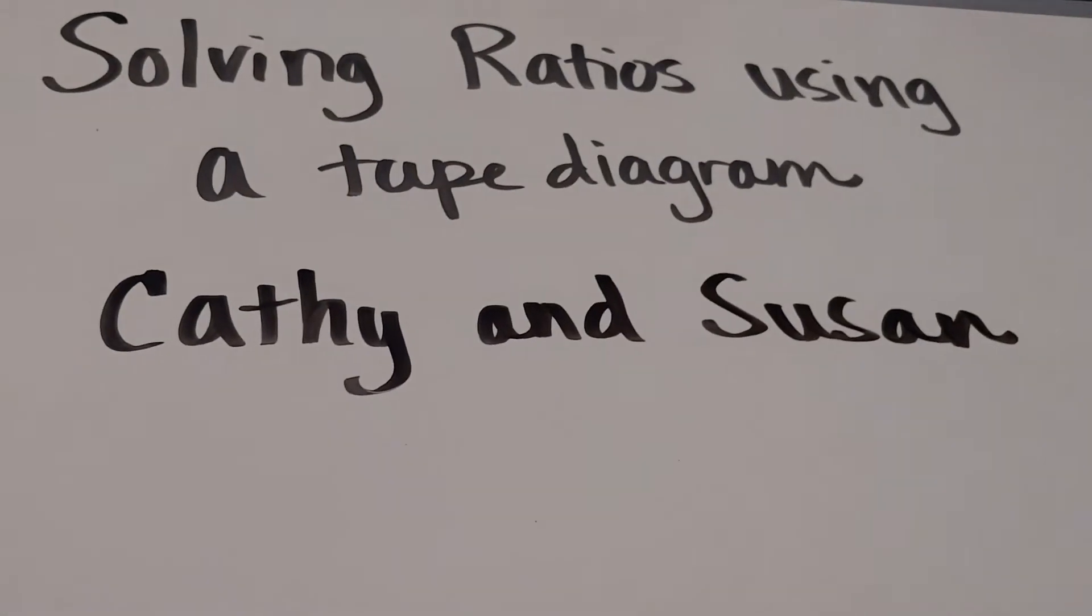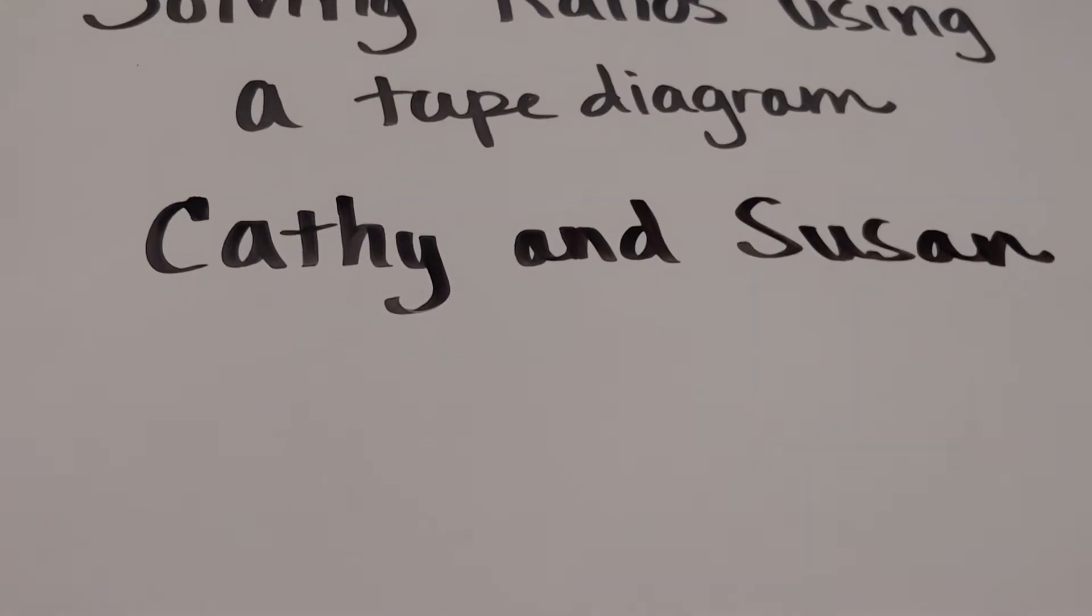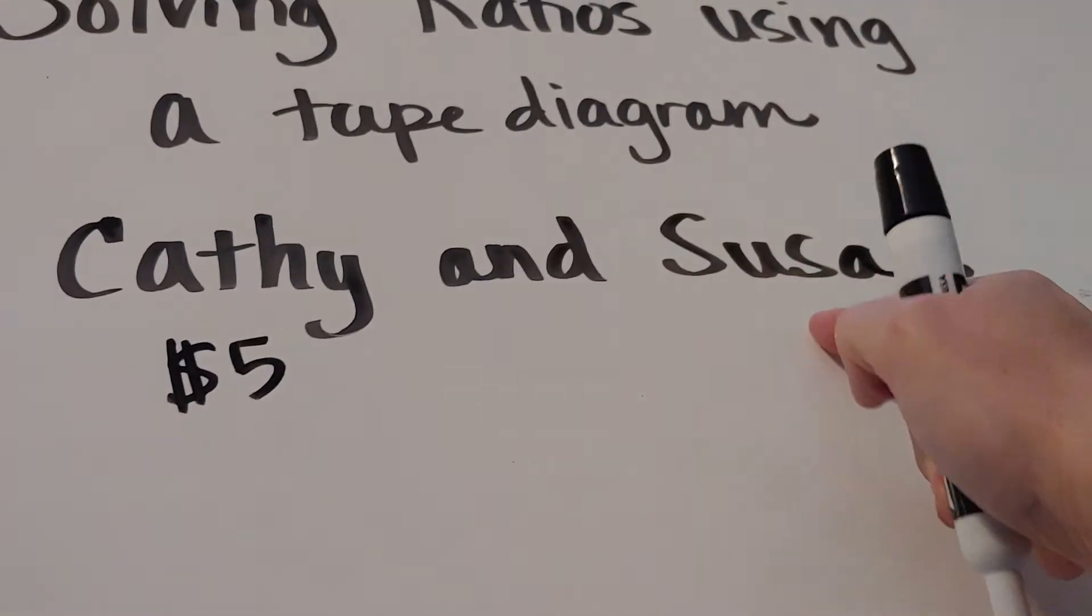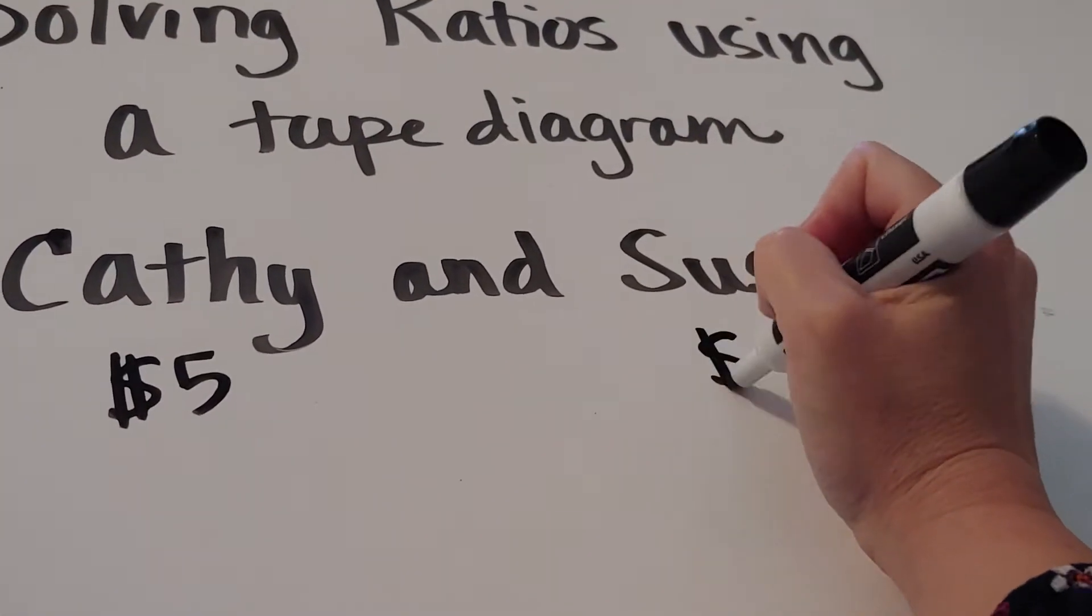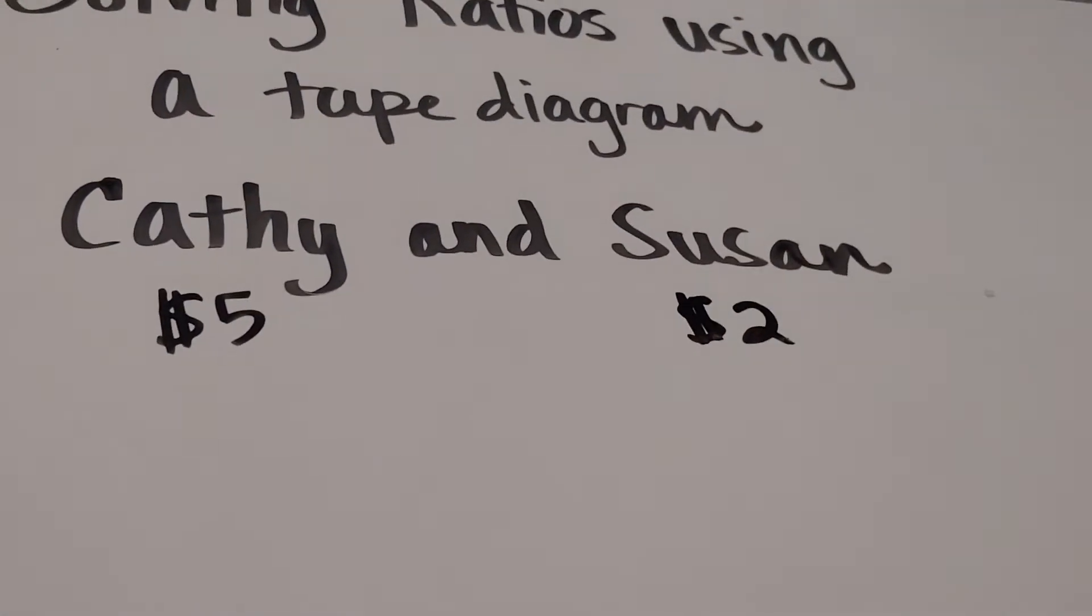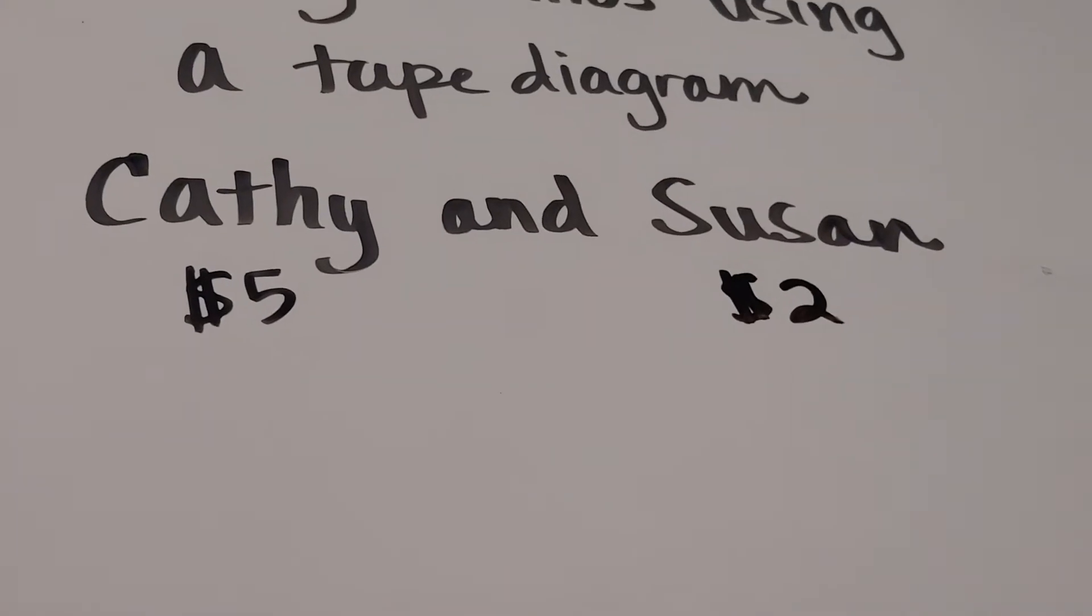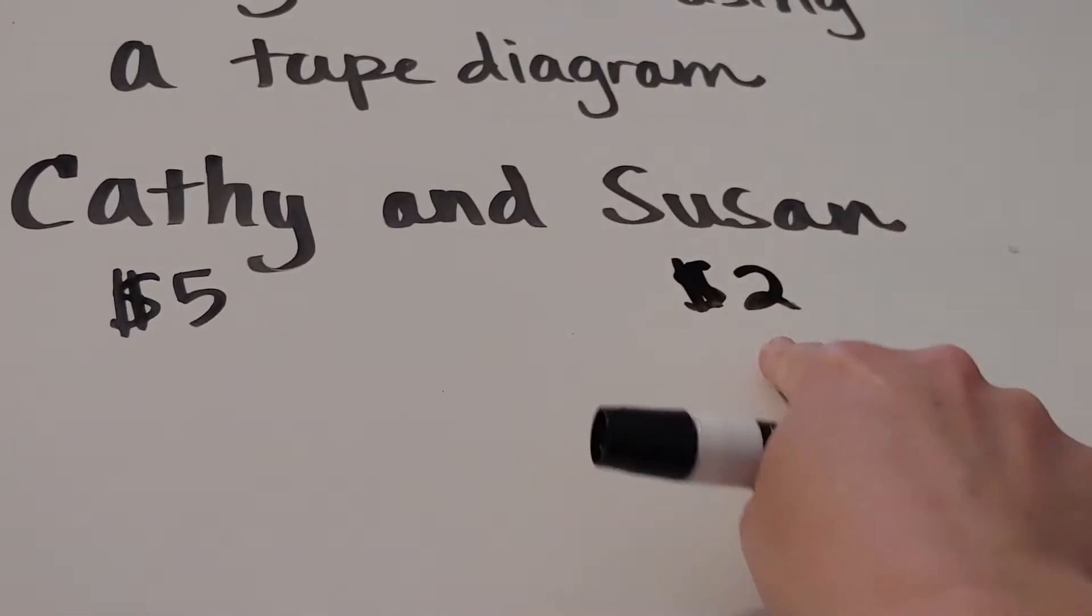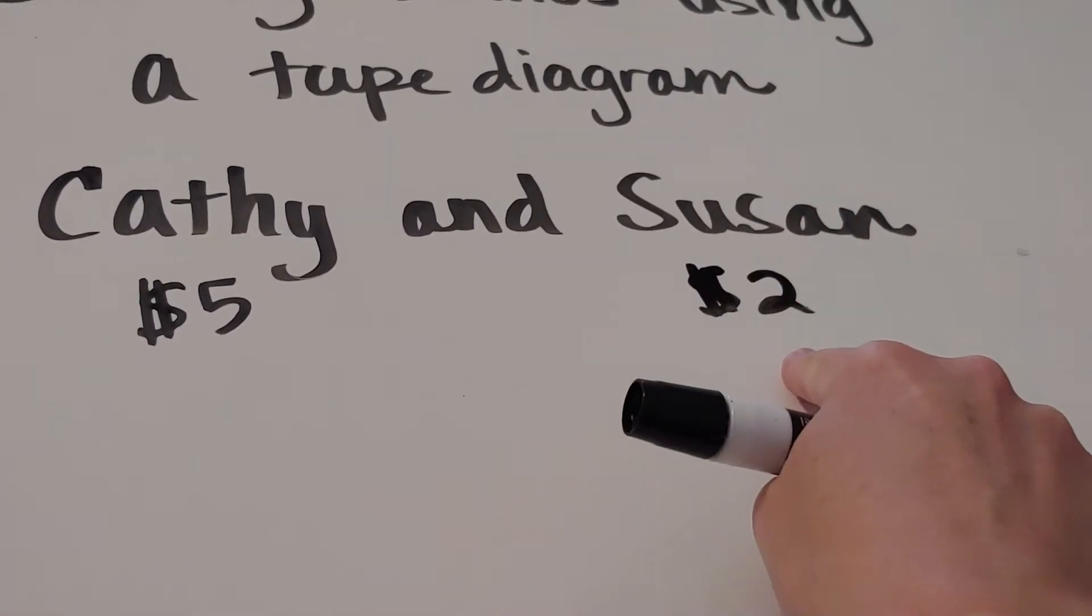Now let's say they were saving money, and Kathy is able to save five dollars every time Susan saves two. Unfortunately, this is always the case. Kathy's always able to save five dollars while Susan is only saving two dollars.